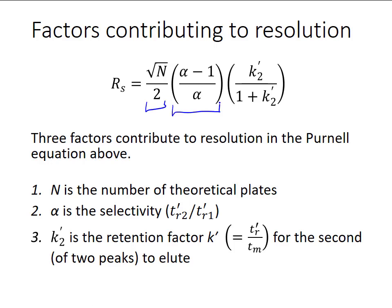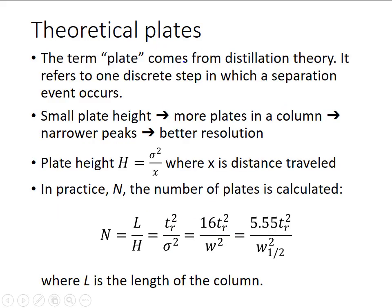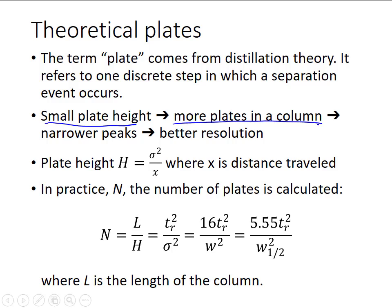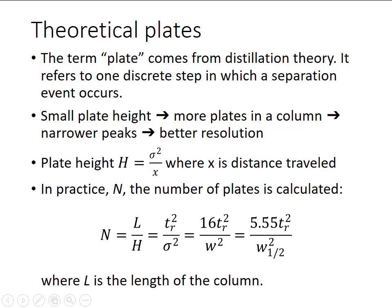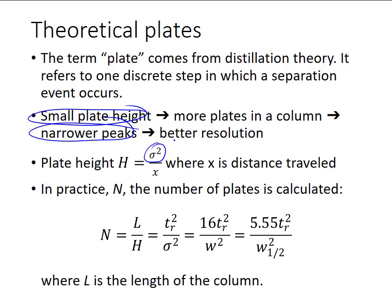In the next few slides we're going to examine the contributions of these three terms of the Purnell equation. First, we'll look at the concept of N theoretical plates. The term plate comes from distillation theory — it refers to one discrete step in which a separation event occurs. A small plate height means you can have more effective plates in a column, and the more plates you have, the narrower your peaks will be and the better resolved they will be. Plate height can be defined theoretically as the standard deviation of the Gaussian peak squared divided by the distance through the column the peak has traveled.